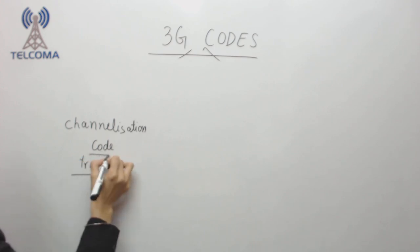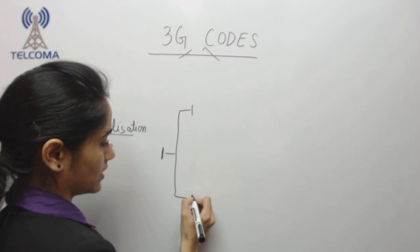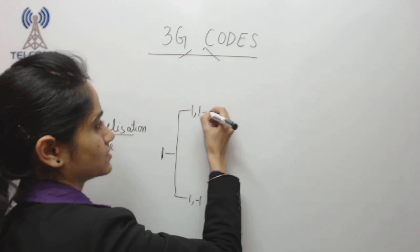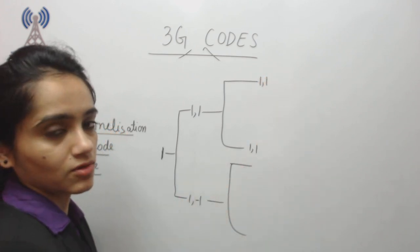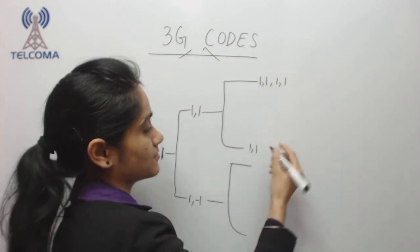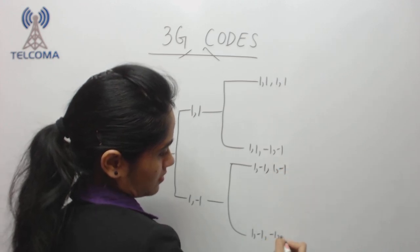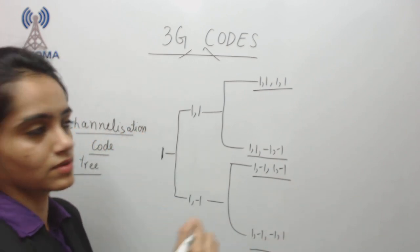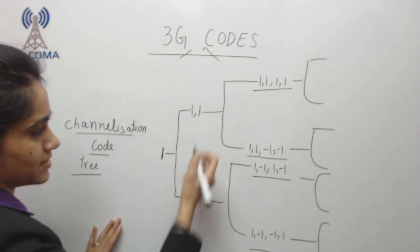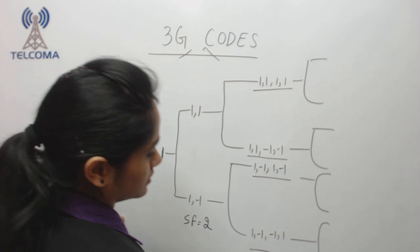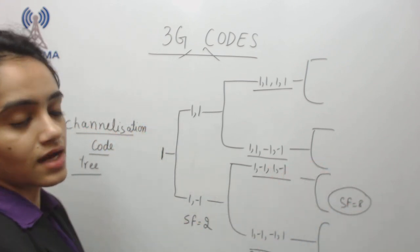Now let's look at how we form a channelization code. Starting with code 1, I spread it by repeating the same code and appending the negative of that code, forming a new code. Then from code 1-1, I write the same code on top and the negative below, generating four different codes. I can spread again — so spreading factor 1 gives 1 code, spreading factor 2 gives 2 codes, spreading factor 4 gives 4 codes, spreading factor 8 gives 8 codes. This is how channelization codes are spread.